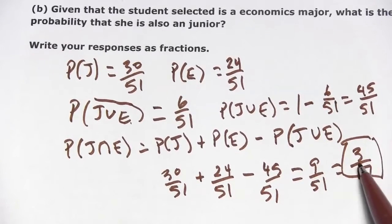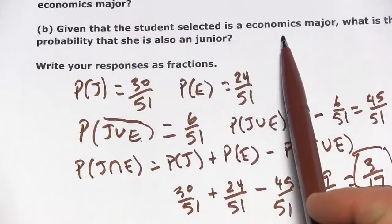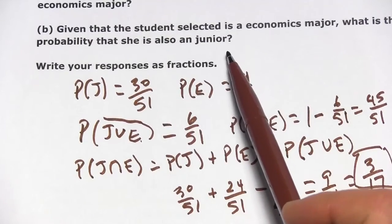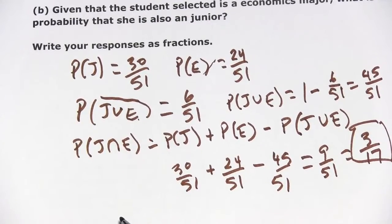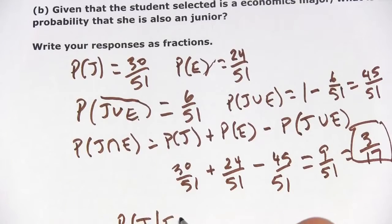And that's going to be useful because the next part we have a conditional probability here. It says, given that the student selected is an economics major, what is the probability that she is also a junior? So that says the probability of being a junior given being an economics major.